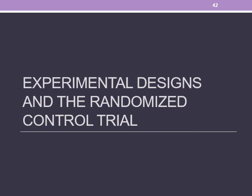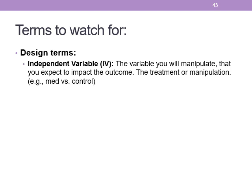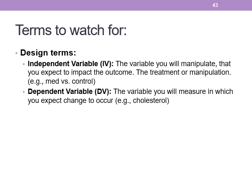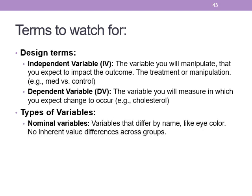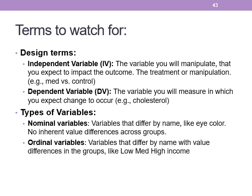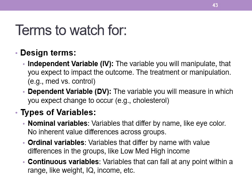In this content, we'll talk about the last method: experimental designs — the only design that can show a causal relationship. Terms to watch for: the independent variable is the variable you'll manipulate, or that you expect to impact the outcome; the dependent variable is the one you'll measure, in which you expect the change to occur, like cholesterol. We also have nominal variables — variables that just differ by name, like eye color; ordinal variables — variables that differ by name but have value differences in the groups, like low, medium, and high income; and continuous variables that fall at any point within a range, like weight, IQ, or income.